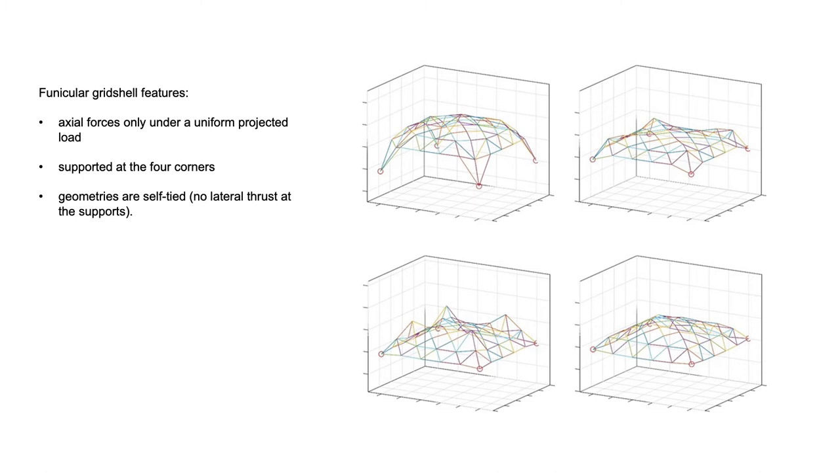From here, the force density method can be used to find a wide range of funicular grid shells, as shown here. Note that the perimeter edge is not planar and that many of the quads are warped, which can cause construction complications. Some of these geometries are obviously not practical but demonstrate the versatility of the approach.